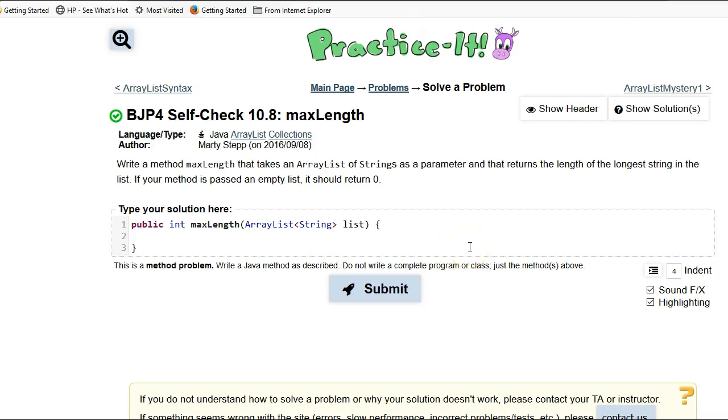This video is to go over Building Java Programs Self-Check 10.8. This is about ArrayLists and in this case we want to get the maximum length string in this ArrayList of strings.